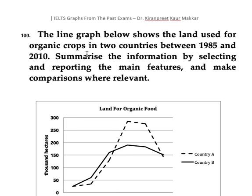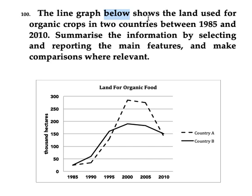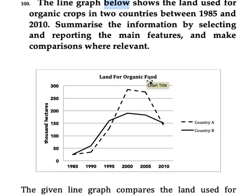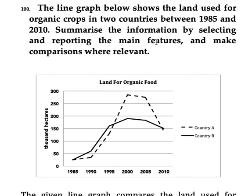In the question, the phrase 'line graph below' — the word 'below' is not used in your answer sheet. So you have to say 'the given line graph.' Instead of 'shows,' you can write 'compares' because there are only two countries to compare, or you can also use the word 'illustrates.' The land used for organic farming in two countries — here I have written 'from 1985 to 2010.' When you write the word 'from,' you match it with 'to,' and the other combination is 'between...and,' as seen in the question.